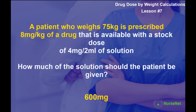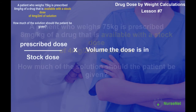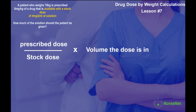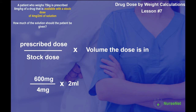In part one of the question, we've identified the prescribed dose, which is 600 milligrams. In part two, the drug is available with a stock dose of 4 milligrams in 2 millilitres of solution. We apply the formula: prescribed dose divided by the stock dose multiplied by the volume the stock dose is in. So 600 milligrams divided by 4 milligrams, multiplied by 2 millilitres, gives us an answer of 300 millilitres of solution.